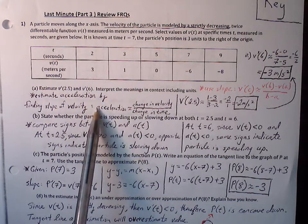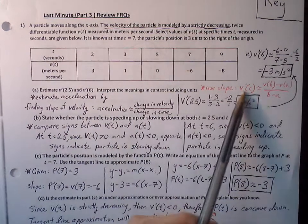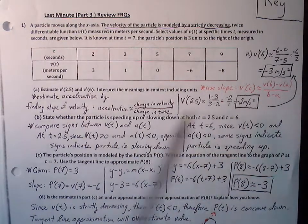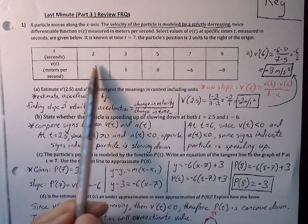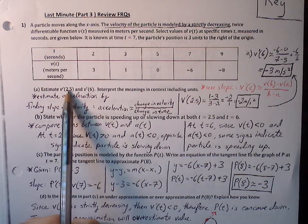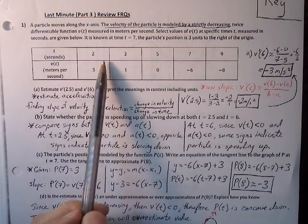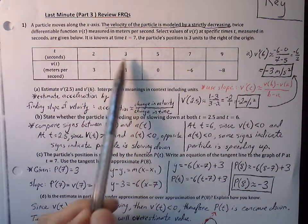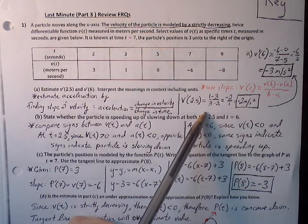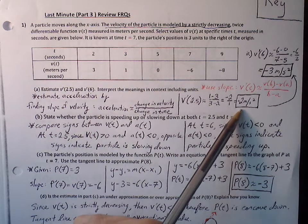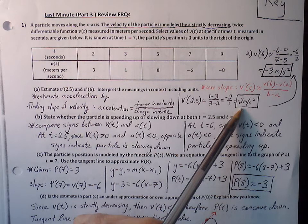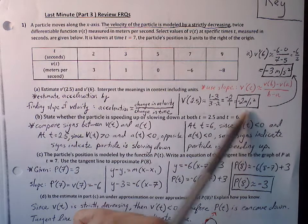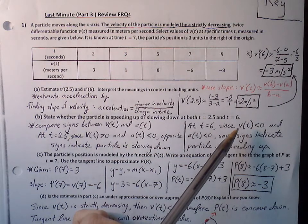To get from velocity to acceleration using approximation, we use slope — change in velocity over change in time. To approximate the slope of our velocity at 2.5, we choose the two closest ordered pairs and compute change in velocity over change in time: (1 minus 3) over (3 minus 2), which gives us negative 2 over 1, or negative 2. Our units of measure is meters per second squared — meters per second per second reduces to meters per second squared.